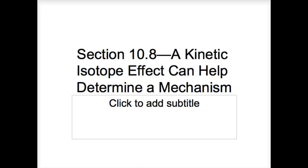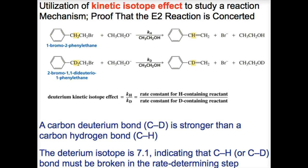We will first look at the kinetic isotope effect. This was used experimentally in the laboratory to determine the mechanisms of SN2, E2, SN1, and E1. Experimental evidence was used to derive the mechanisms we've seen for SN1, SN2, E1, and E2 — that is, the rates of reaction, the relative reactivities of the reactants, and the structures of the products. The deuterium kinetic isotope effect is another useful experimental tool to study these reaction mechanisms.